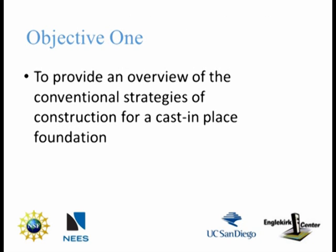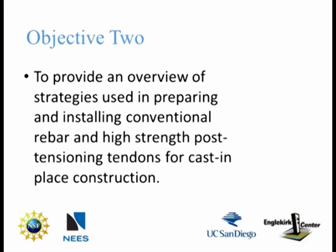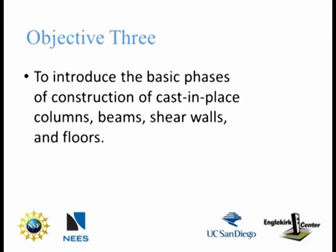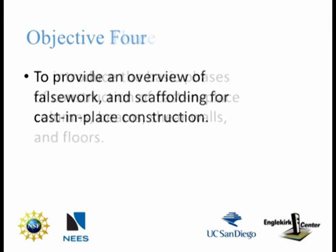Objective 1: To provide an overview of the conventional strategies of construction for a cast-in-place foundation. Objective 2: To provide an overview of the strategies used in preparing and installing conventional rebar and high-strength post-tensioning tendons for cast-in-place construction. Objective 3: To introduce the basic phases of construction of cast-in-place columns, beams, shear walls, and floors. Objective 4: To provide an overview of falsework and scaffolding for cast-in-place construction.